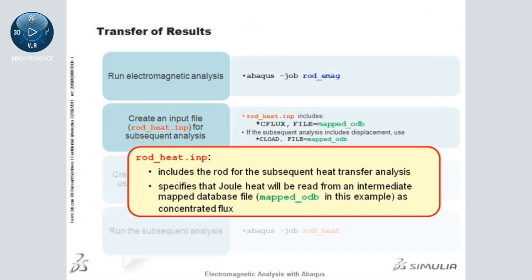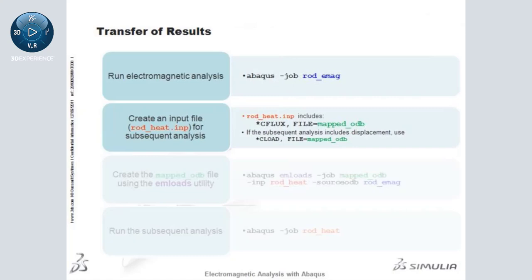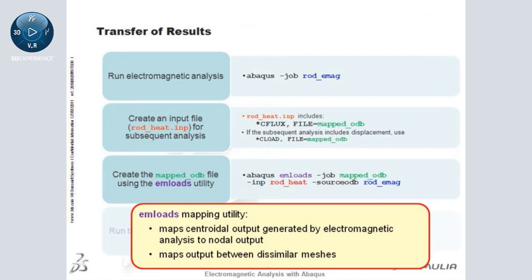The thermal analysis will be performed on the rod only. The joule heat output from the electromagnetic analysis will be read in from an intermediate mapped database file as concentrated flux using the CFlux keyword. If the subsequent analysis included displacement, then the Lorentz force would be read in as concentrated loads using the CLoad keyword. The intermediate mapped database is created using the EMLoads utility. This utility maps the centroidal output generated by the electromagnetic analysis to nodal output, and maps output between dissimilar meshes.